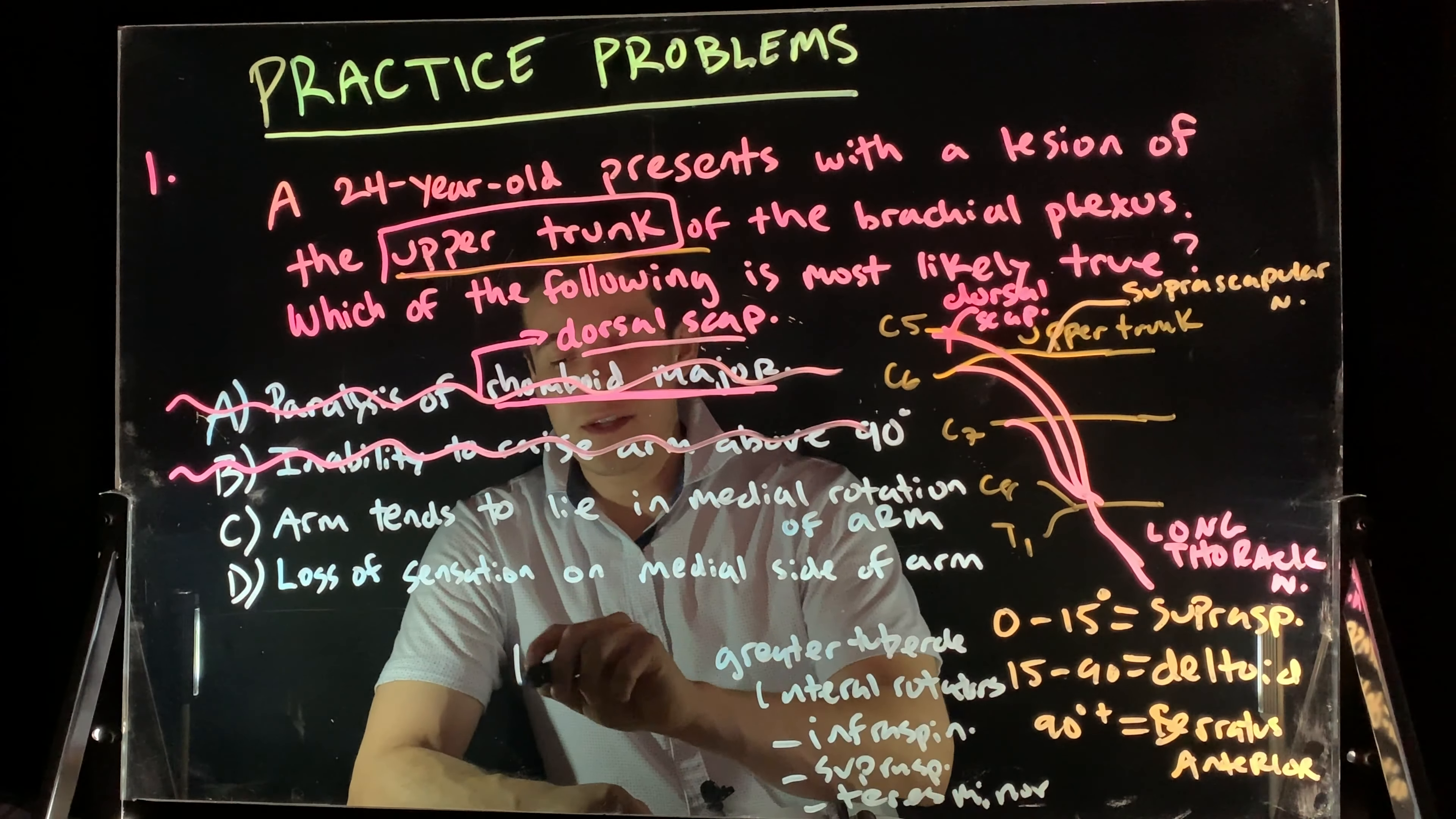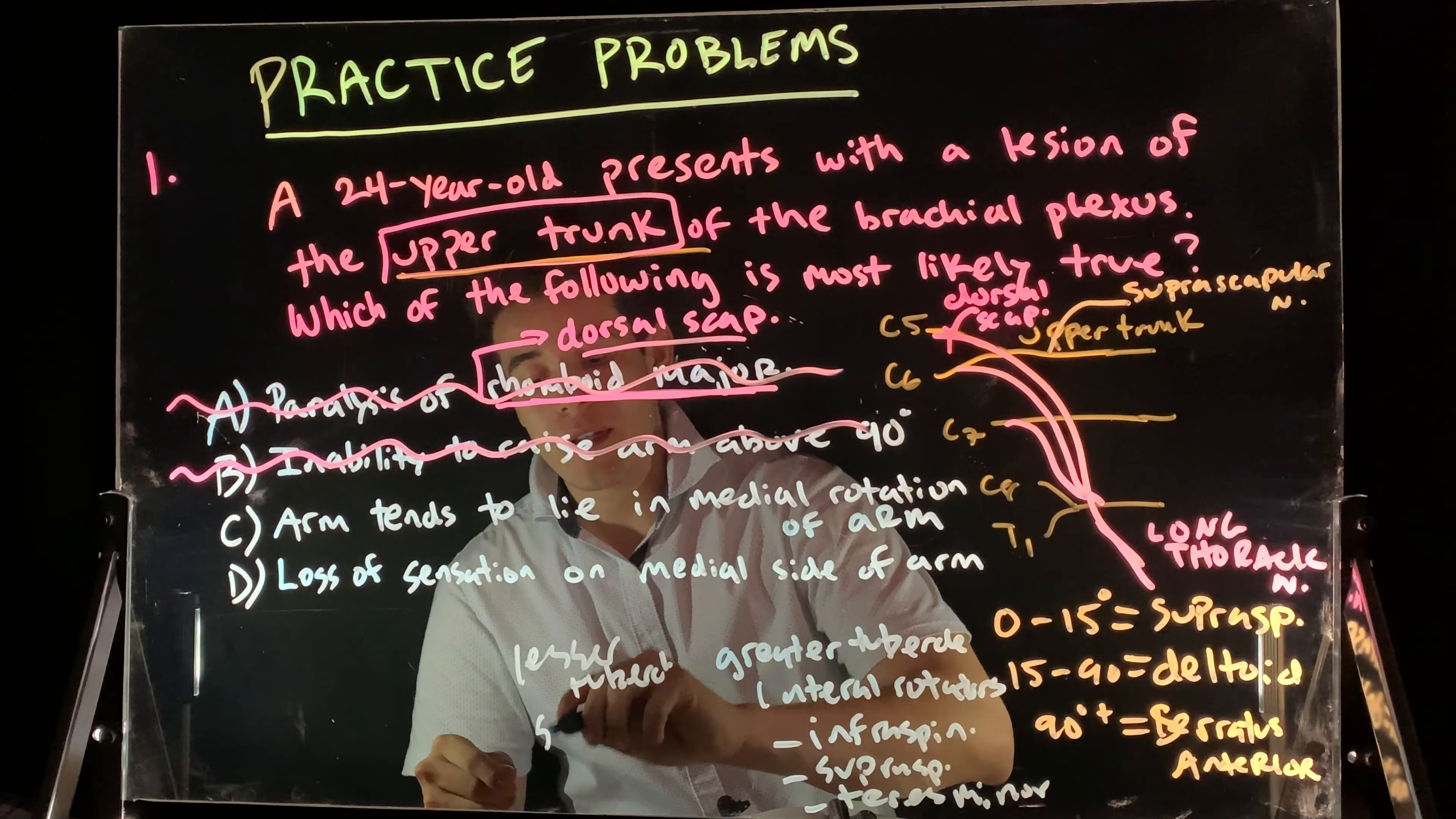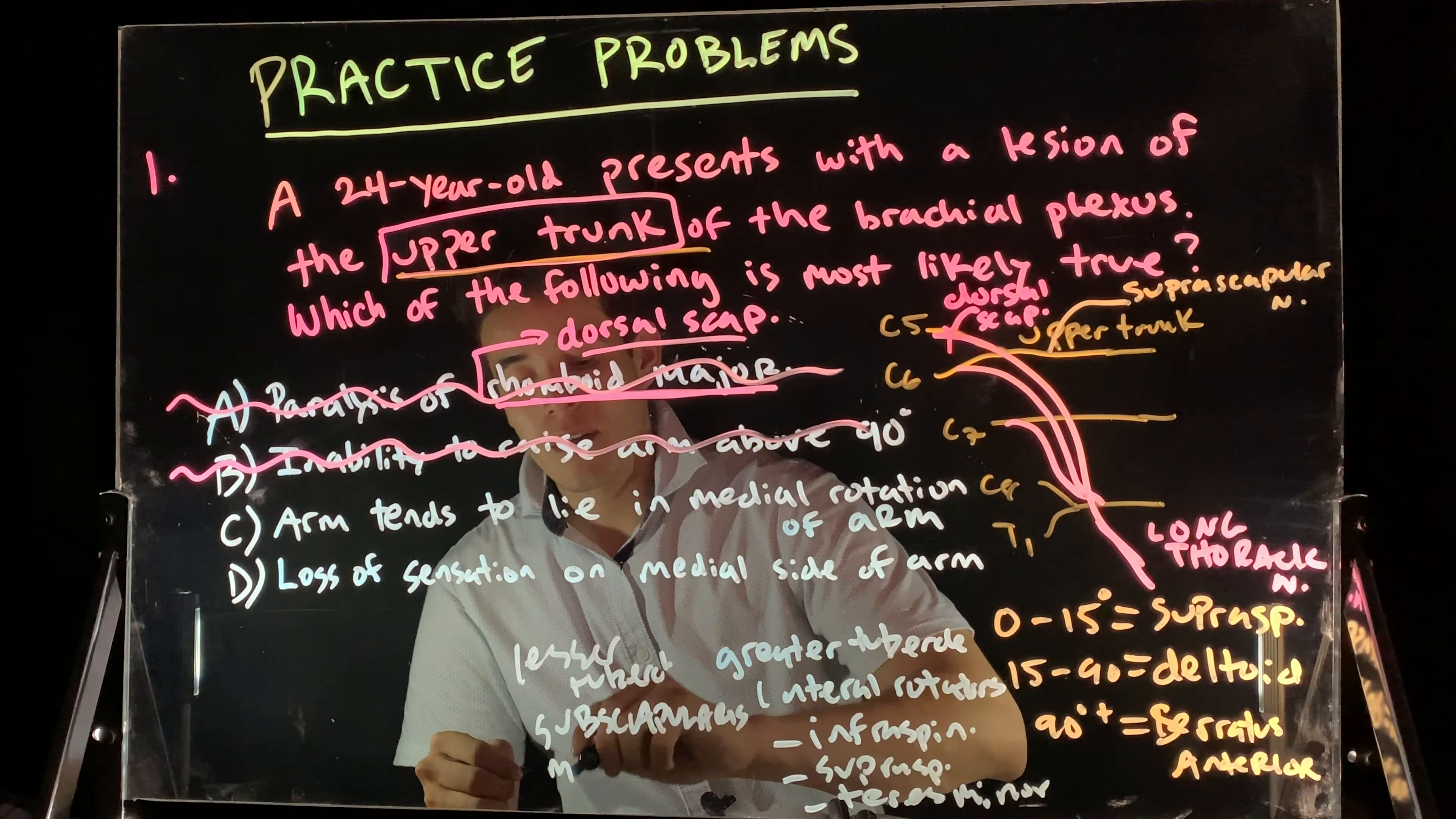And then, we know attached to the lesser tubercle, we have one muscle that goes on the anterior side that goes to the lesser tubercle. That's my subscapularis. So, my subscapularis will help me medially rotate.